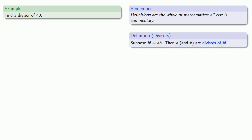So let's write 40 as a product. And we observe that maybe we can write 40 as 4 times 10. And so both 4 and 10 are divisors of 40.